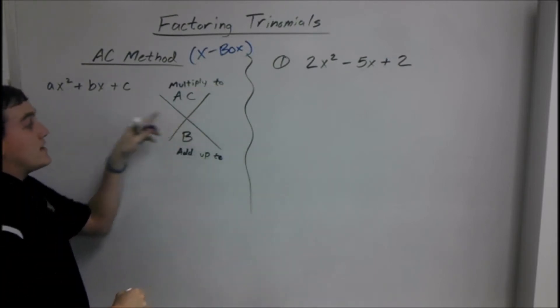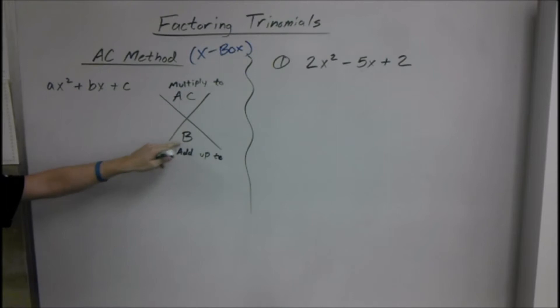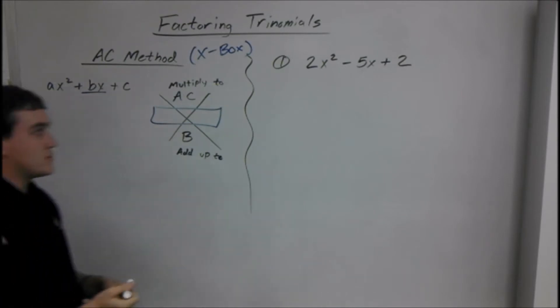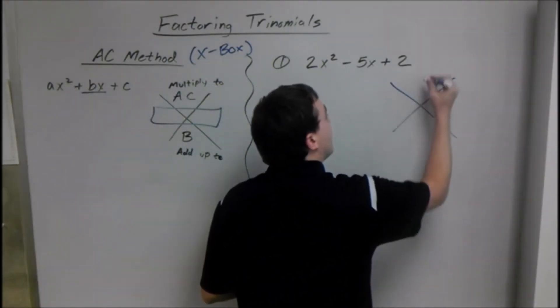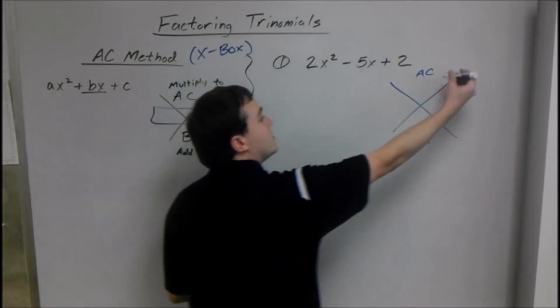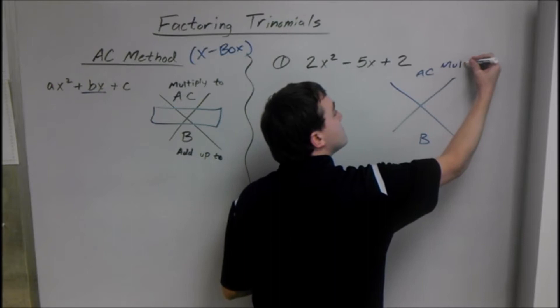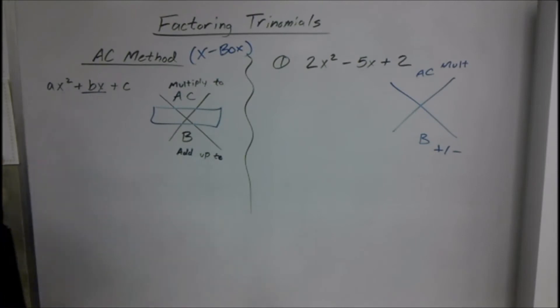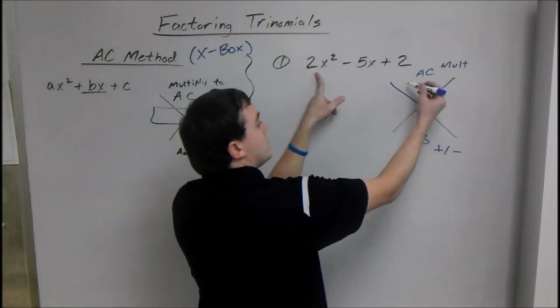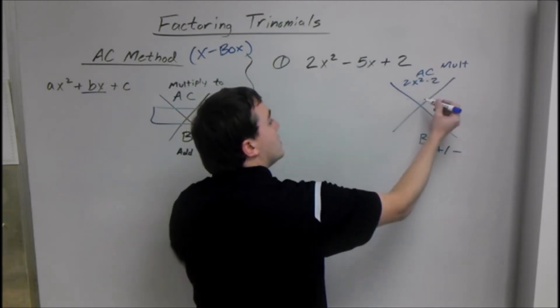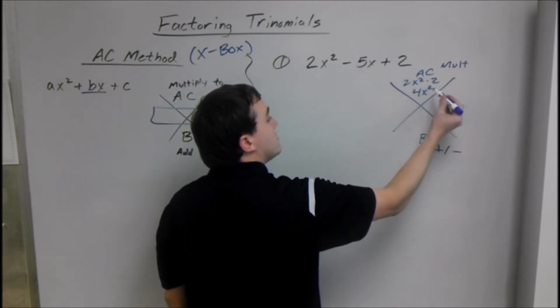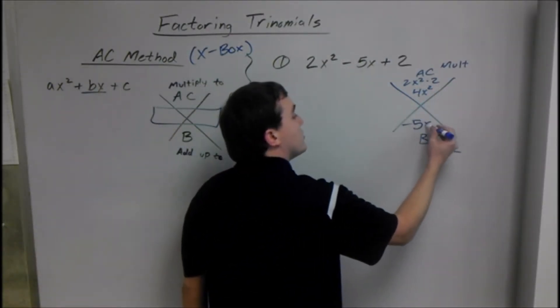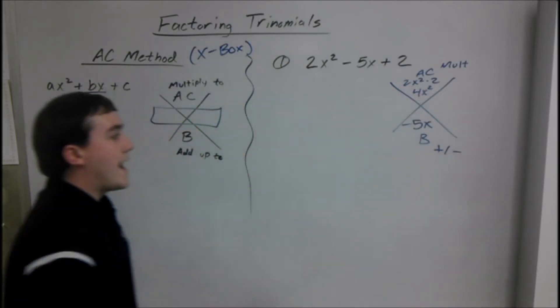When you set up the X and find these two numbers that multiply to equal A times C that add up to B, you put a box around them, and then they replace the middle term. We're going to do that with our first example. First, set up the X. A times C goes in the top, B goes in the bottom. A times C is 2X squared times 2, which is 4X squared. And our B term is negative 5X.